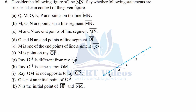Question six: consider the figure of line MN and say whether the following statements are true or false. Part a: Q, M, O, N, P are points on line MN — true, all these points fall on line MN. Part b: M, O, N are points on line segment MN — true, O falls in between and M and N are part of the finite line segment. Part c: M and N are end points of line segment MN — true, MN is a line segment with finite length and M and N are its end points.